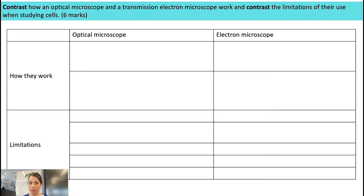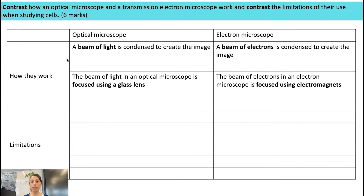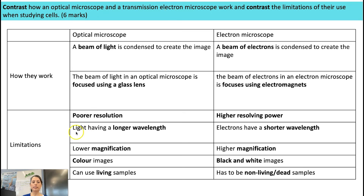You could also present these answers as a table. In the exam you won't make a neat table, but the idea is: one column for the optical microscope, the other for the electron microscope, still split into the two subsections of how they work and the limitations. Instead of comparative sentences, you're placing contrasting information on the same row to demonstrate the contrast. For AQA, you can use tables or bullet points for any question except the essay.